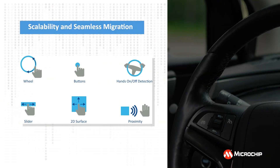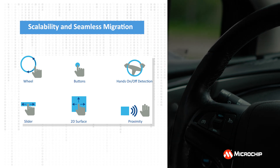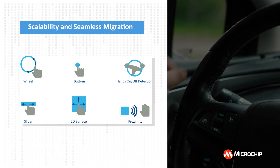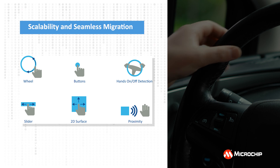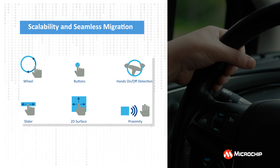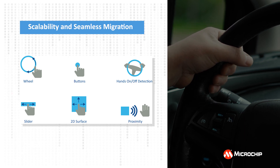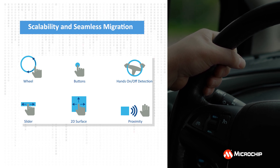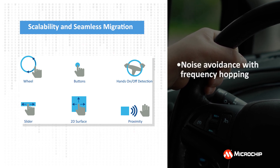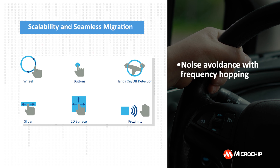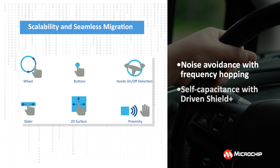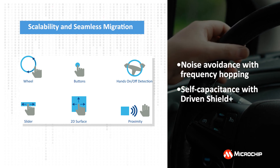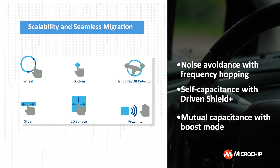Our Core Independent Touch DSCs along with the libraries from MCC, the free graphical code configuration environment, support various touch use cases and features. The solution offers high signal-to-noise ratio touch acquisition including noise avoidance techniques such as frequency hopping, self and mutual capacitive sensing, Driven Shield Plus for implementing water tolerance, and boost mode to reduce the scan time.